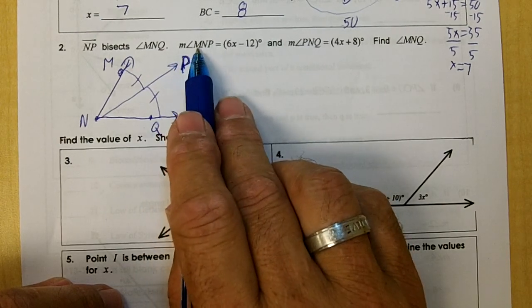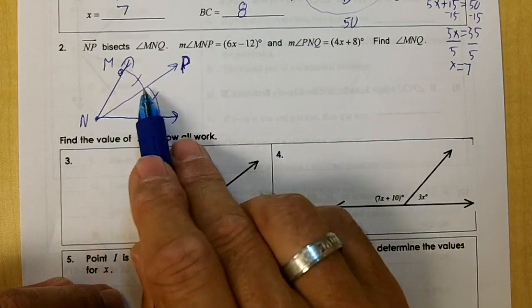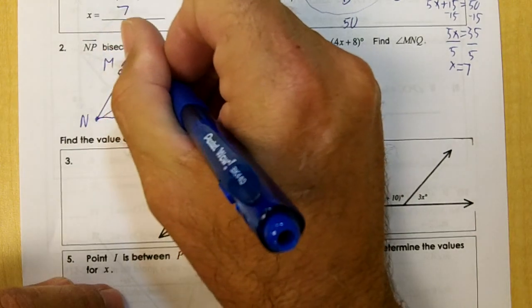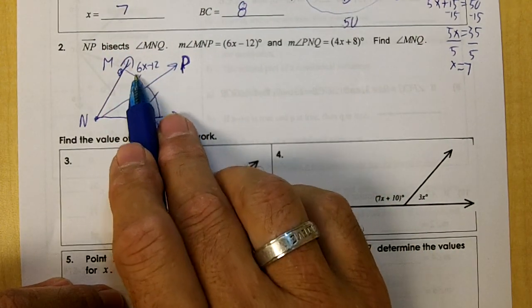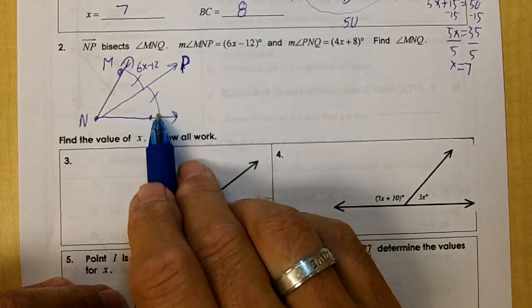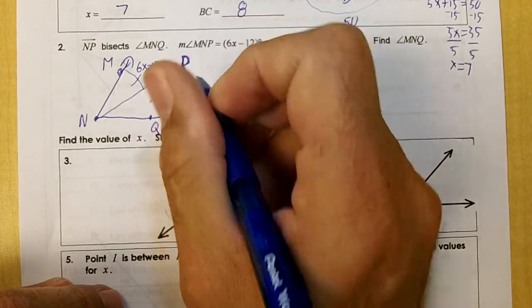The measure of angle MNP is 6X minus 12. So we're going to put 6X minus 12 there. If this is 6X minus 12, what's this going to be? It's also going to be 6X minus 12.